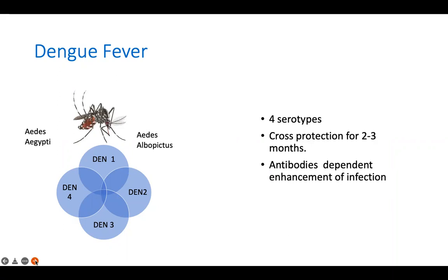If you get a dengue infection, are you protected against subsequent infections? You have protection for only the next two to three months. After that, you are susceptible to getting another secondary dengue infection, this time with a different serotype.